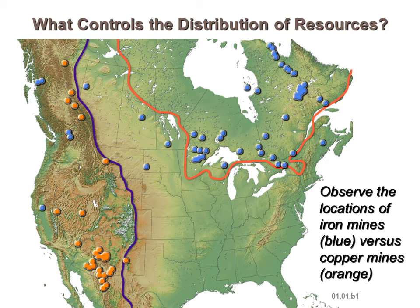That's the iron in the Canadian Shield — representing an occurrence in geologic history two billion years ago, a snapshot of what was going on on the planet at that time. The copper mines are much younger: 50 to 150 million years old, related to events that formed a mountain belt along the west coast. There are no large iron or copper mines in the southeast because the region doesn't have the appropriate type of rocks or geologic history. Distribution of resources is controlled by geology — such as age and type of rocks and the geologic history — what was the environment at the time when these rocks were forming?